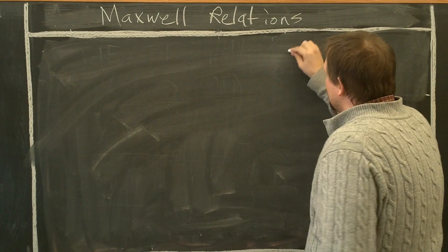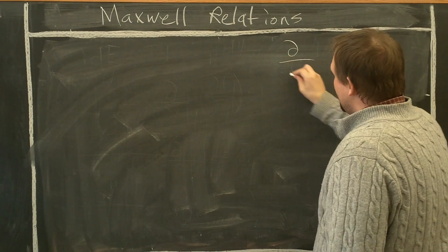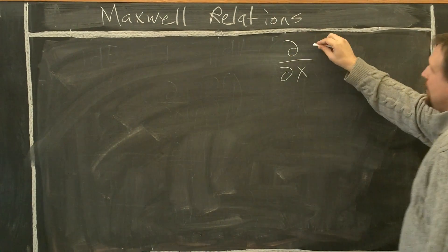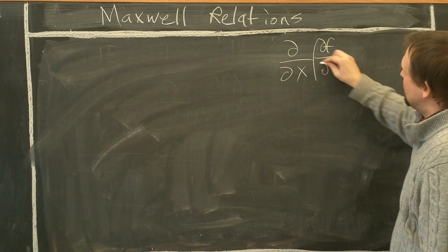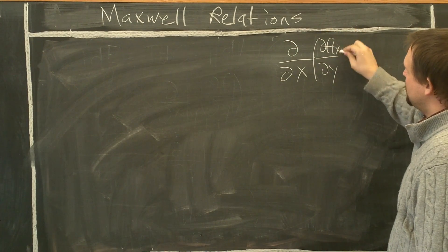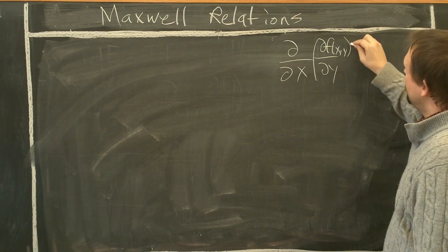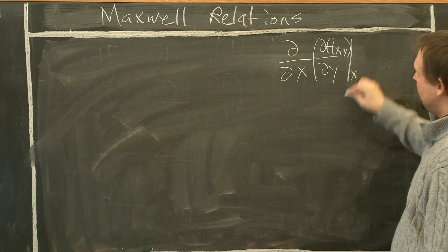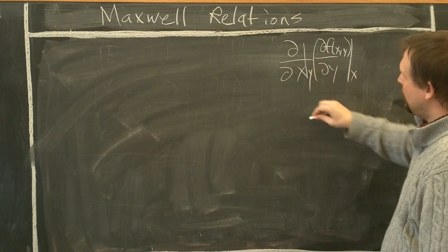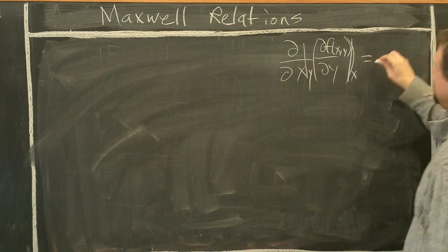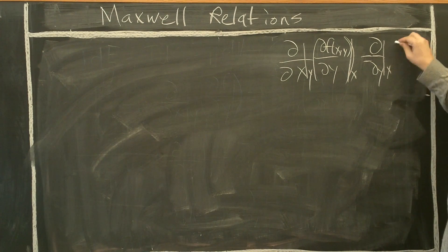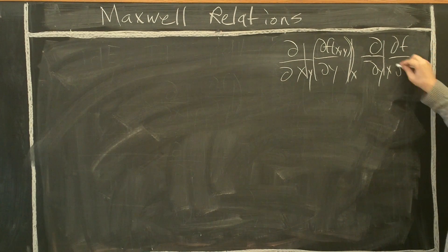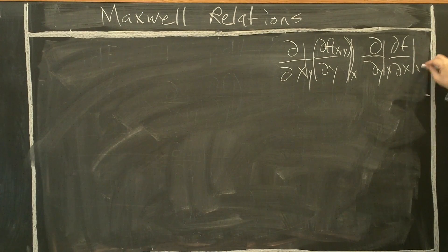We can write this up here in this corner in this way: partial with respect to x of some function, ∂f/∂y. If f is a function of x and y, we'll give the first derivative here, you can keep the x fixed the second time you can keep the y fixed. This is equal to ∂/∂y with x fixed, ∂f/∂x keeping y fixed.